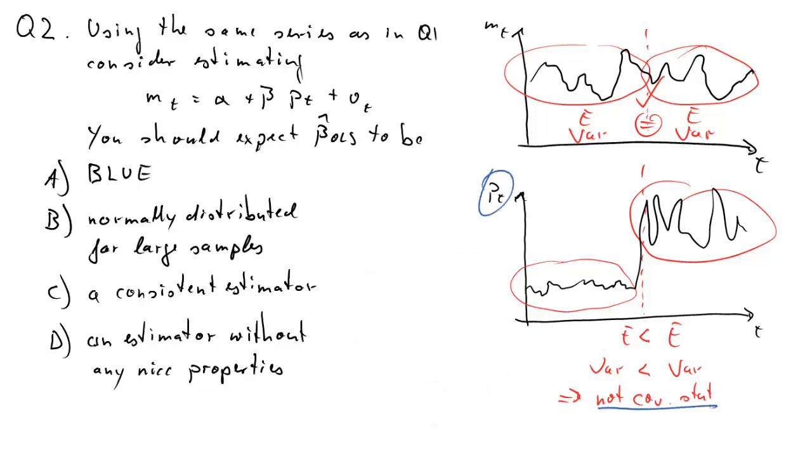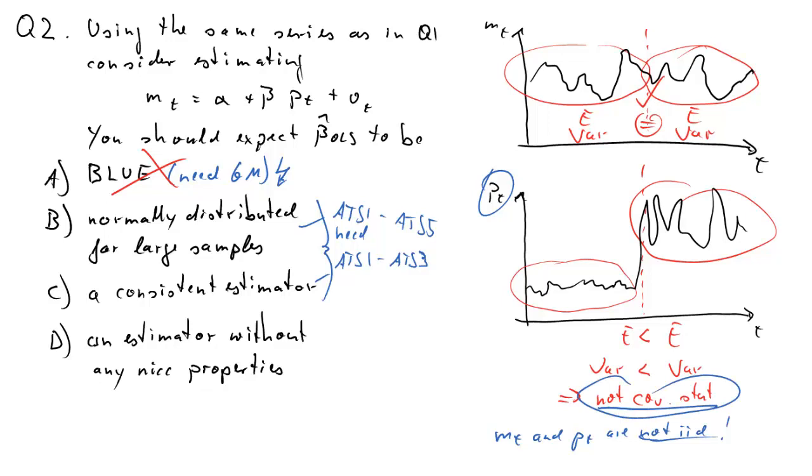So here's the solution. Previously, we decided that PT was not covariance stationary. Altogether, actually, neither MT nor PT are IID. IIDness, however, is an element of the Gauss-Markov assumptions, which we need to establish the BLUE property for an estimator. So since Gauss-Markov is not met, this parameter estimator, OLS estimator, is not going to be BLUE. For B and C, these are large sample properties for time series data. For consistency, we needed time series assumptions 1 to 3. For being normally distributed, time series assumptions 1 to 5. Since PT is not covariance stationary, assumption 1 is not met. Therefore, B and C are incorrect. D, however, is the only correct solution.